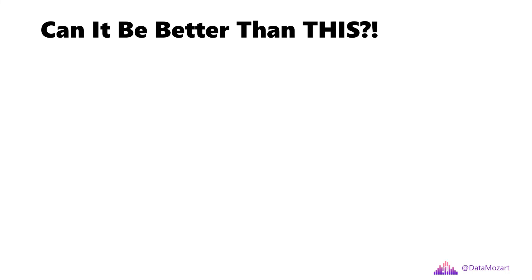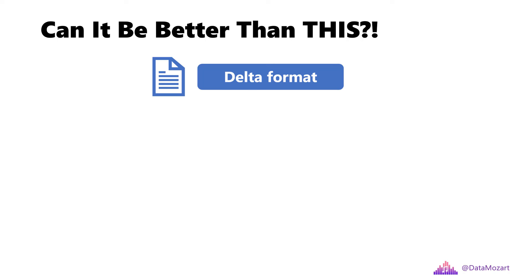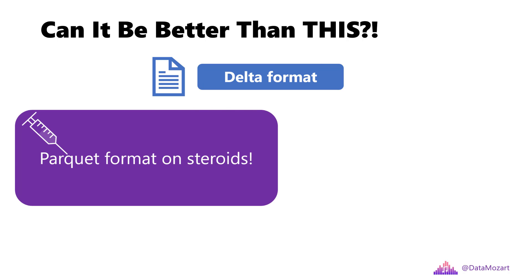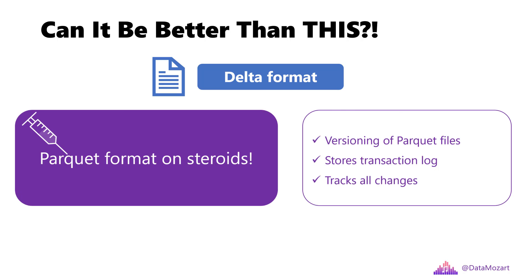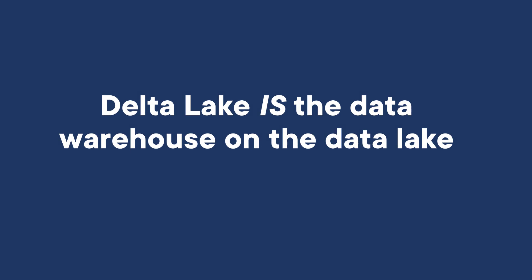Can it be better than this? Yes, with the Delta Lake file format. To put it in plain English, Delta Lake is nothing else but Parquet format on steroids. The main one is the versioning of Parquet files. It also stores a transaction log to enable keeping track of all changes applied to the Parquet file. This is also known as ACID compliant transactions. Since it supports not only ACID transactions, but also time traveling like rollbacks and audit trails, and data manipulation language statements such as insert, update and delete, you won't be wrong if you think of Delta Lake as a data warehouse on the Data Lake, or Data Lakehouse.